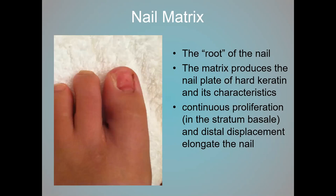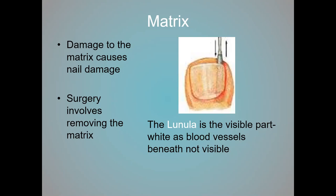The nail matrix is the root of the nail and is responsible for producing the keratin of the nail plate. Any damage to the matrix will show damage in the nail plate itself. When podiatrists do surgery for ingrown nails, the surgery involves removing part of the matrix. The lunula is just one part of the matrix, but it actually extends a bit more proximally. The matrix is the cellular component that produces the corresponding nail plate, so when we want to permanently remove a nail, we must remove the matrix.